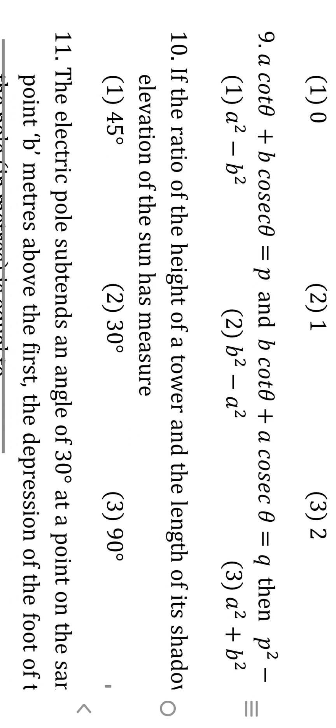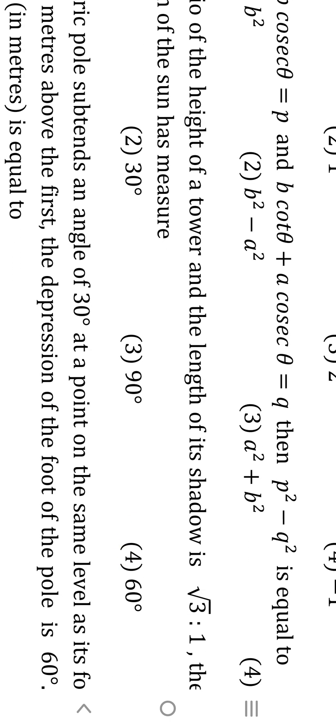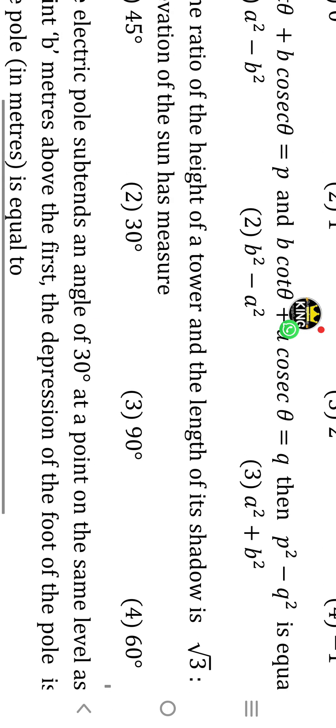Tenth question: the ratio of the height of the tower and the length of its shadow is √3 to 1. That is nothing but tan60°. So θ is 60 degrees. If the question gives √3 to 1, then the answer is 60 degrees.